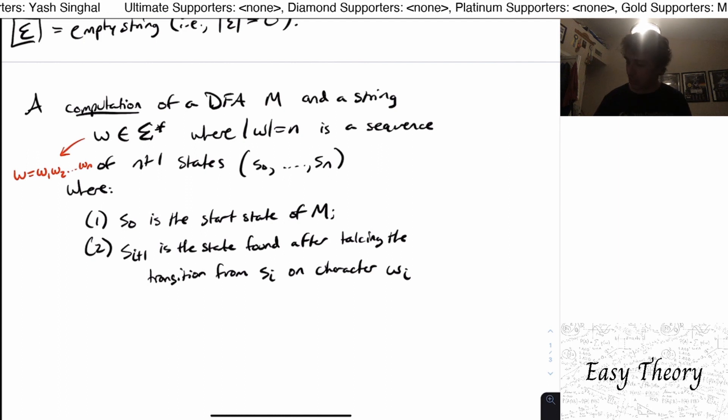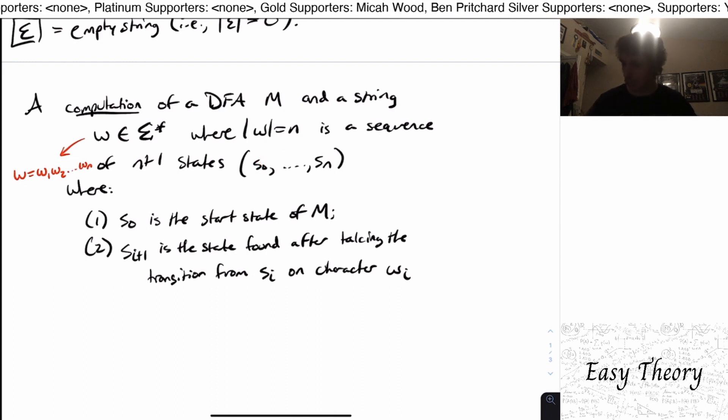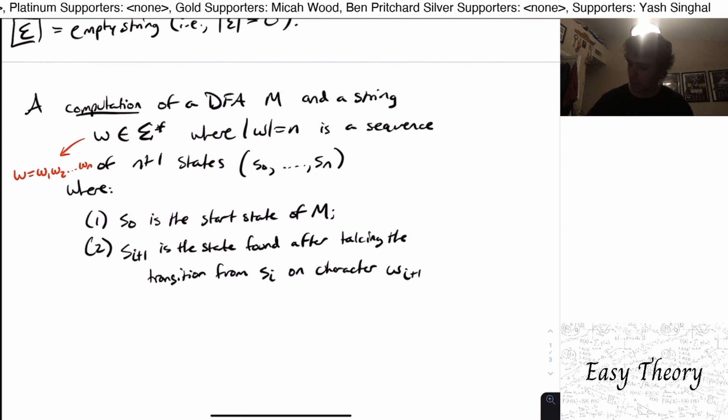So each of the characters, I'm going to call the first one w1, the second one w2, etc., all the way to the end. So this is saying that to get to the i plus first state, I got to read the ith character. So for example, if I wanted to go to s sub one, the next one in this sequence, I got to figure out where to go from s0 on input. Actually, I have this backwards, it should be wi plus one. That's my mistake. So it should be wi plus one.